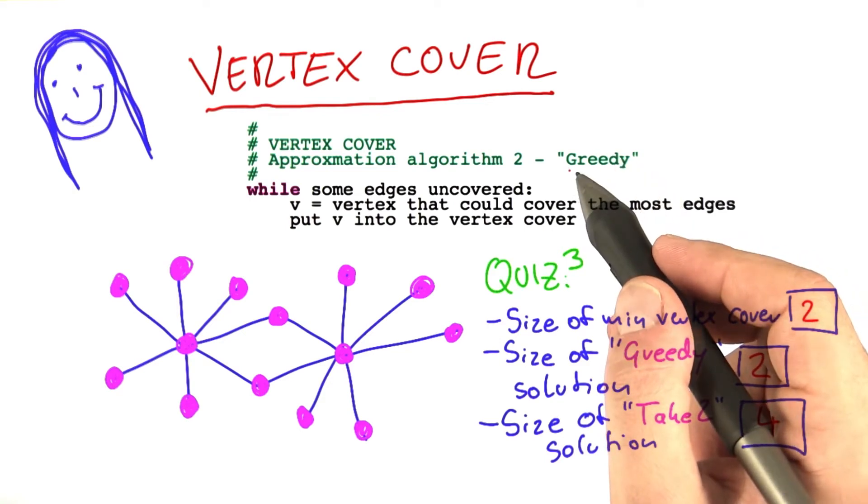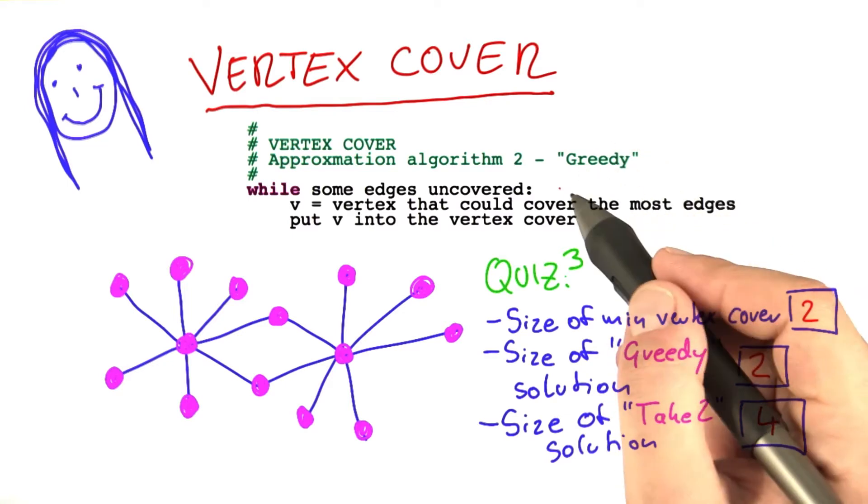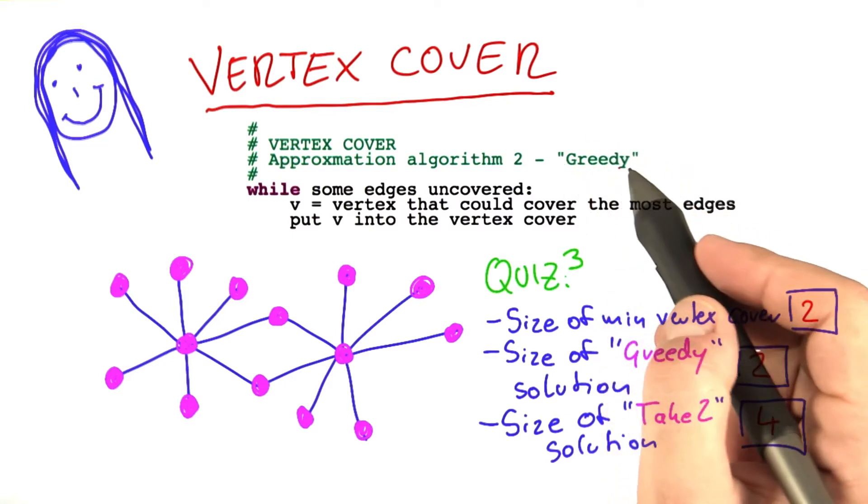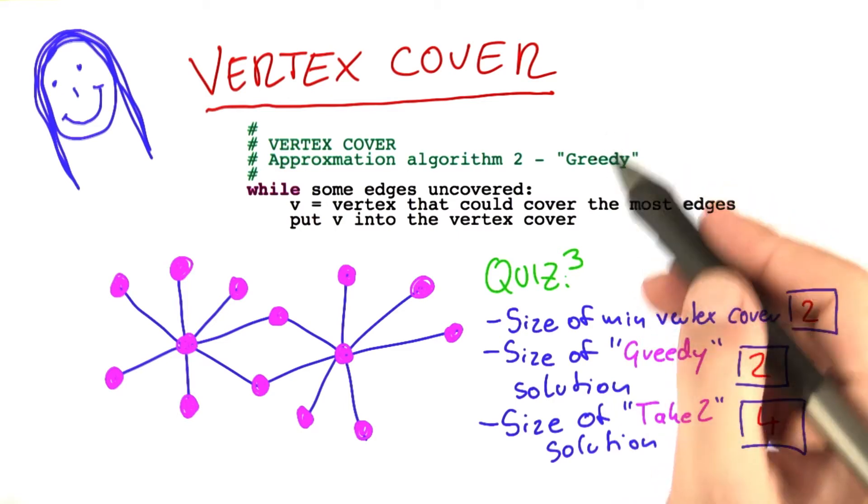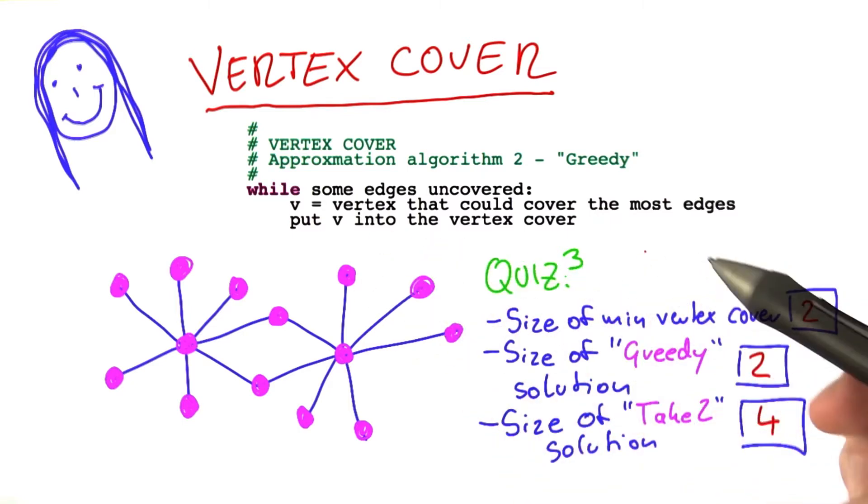And that will give us some indication on where this algorithm could fail and how badly it could fail. So if it's a factor 2 approximation algorithm, if it's a factor 1.5 approximation algorithm maybe, or if it's actually not a good approximation algorithm at all, although it sounds good.